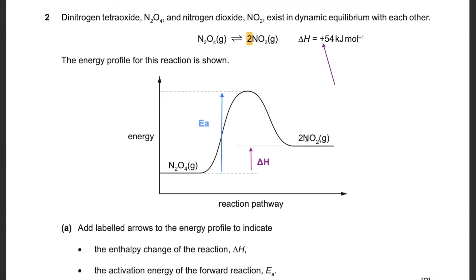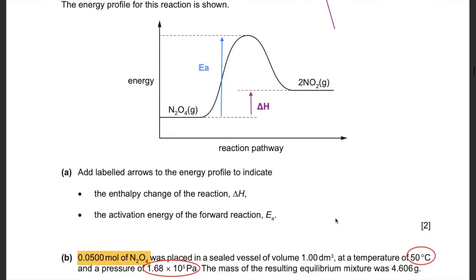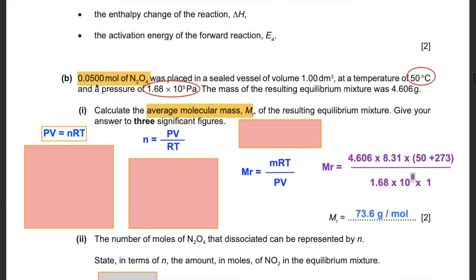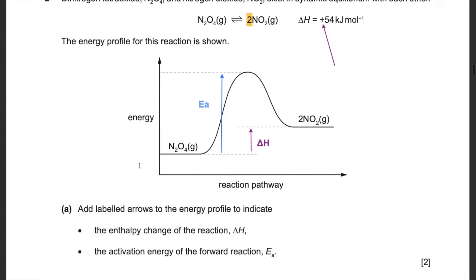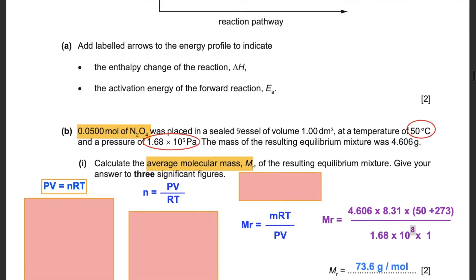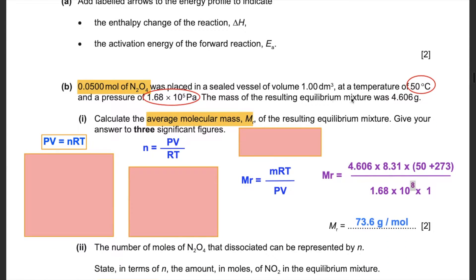Imagine rolling a ball upwards — it won't make it to the top unless you give it enough energy, and then it can go down and give you the products. Part B is the state of matter section. We have 0.0500 moles of dinitrogen tetraoxide placed in a sealed vessel of volume 1 dm³ at 50°C and a pressure of 1.68 × 10⁵ Pa. The mass of the resulting equilibrium mixture was 4.606 g. We need to find the average molecular mass to three significant figures. Note that some values need unit conversion — degrees Celsius to Kelvin, and Pascals to kiloPascals.